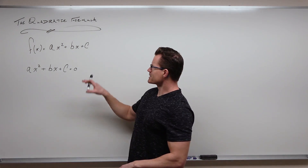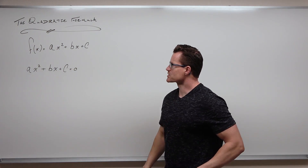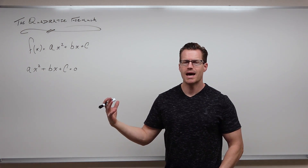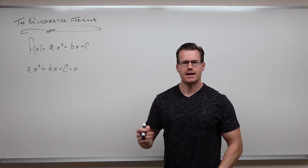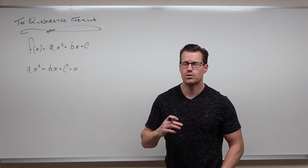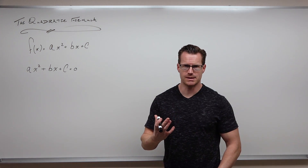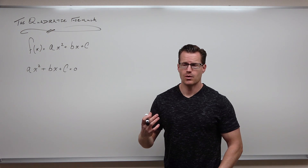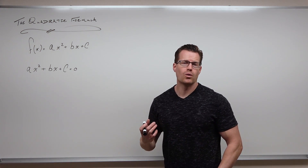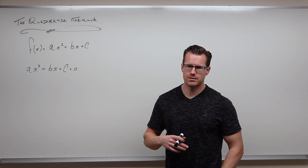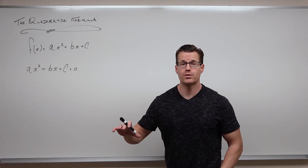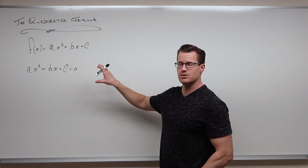Let's suppose that we want to find x-intercepts. What does the quadratic formula work with? It works with quadratics, and it does exactly one thing: it finds x-intercepts, zeros or roots, wherever they exist — whether they're imaginary, whether there's one solution (the same solution twice), or whether there are two real solutions. So it works all the time. If factoring doesn't work, this is your best friend.